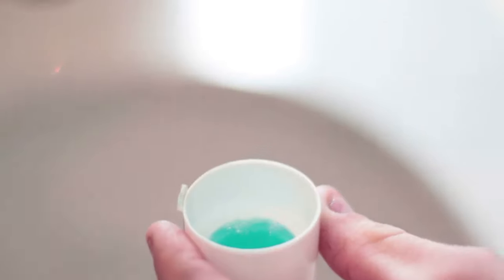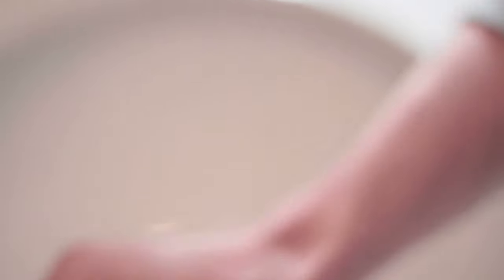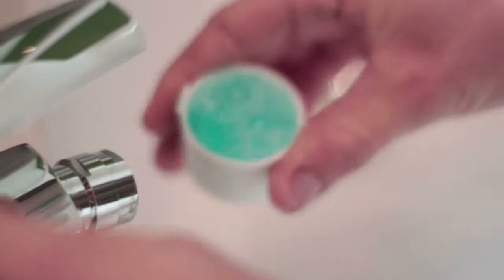Mix one-fourth of a teaspoon of hydrogen peroxide with one-fourth of a teaspoon of baking soda in half a cup of water. Use this mixture as a mouthwash daily after brushing your teeth with regular toothpaste.